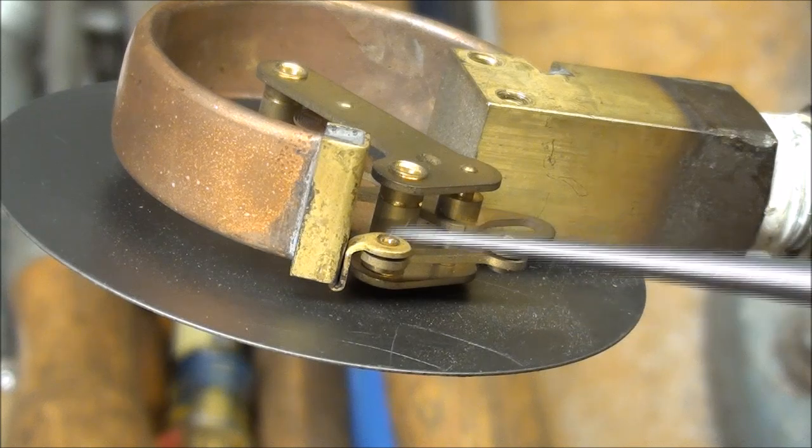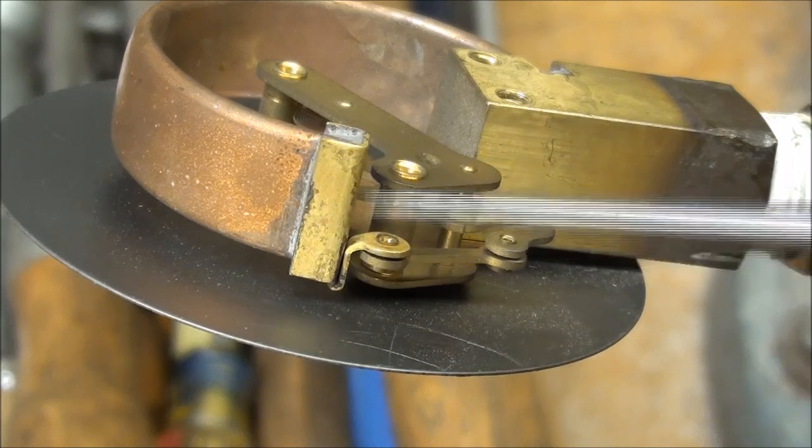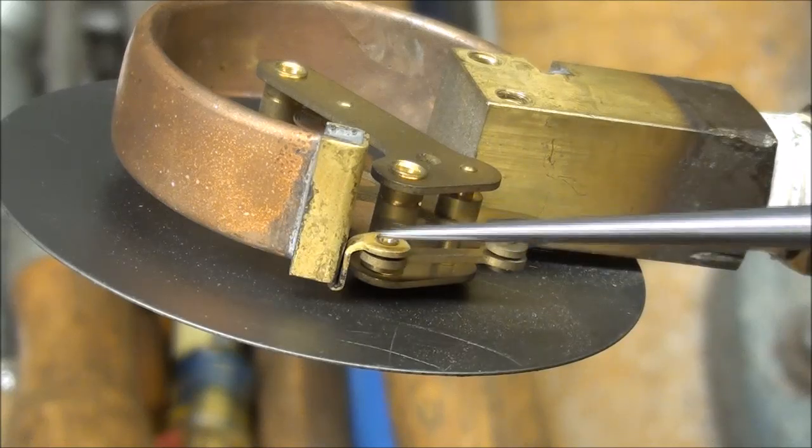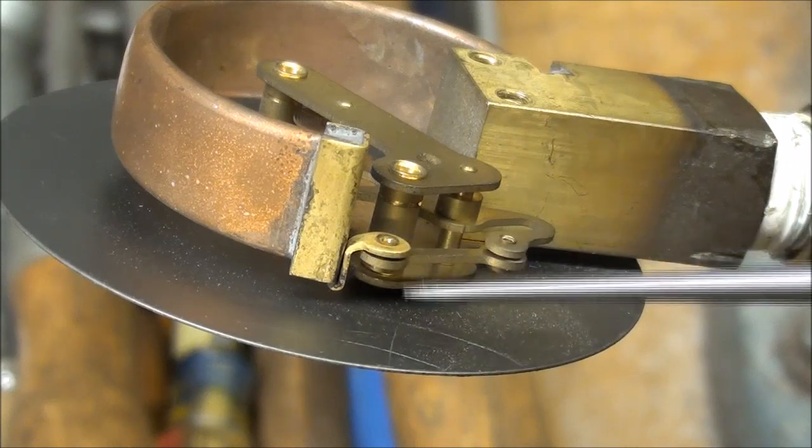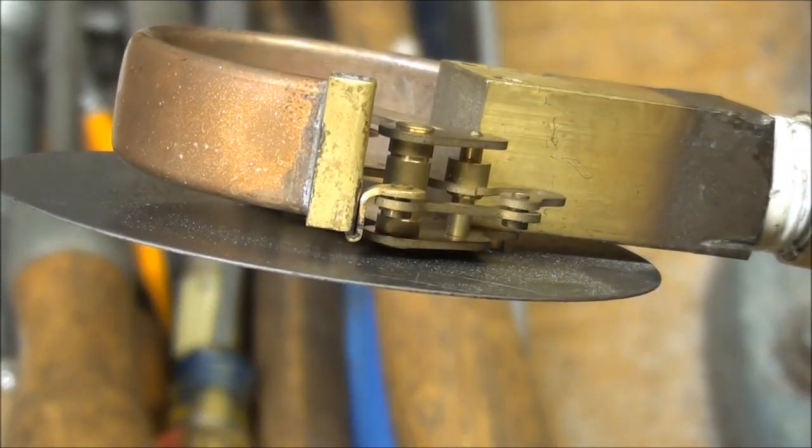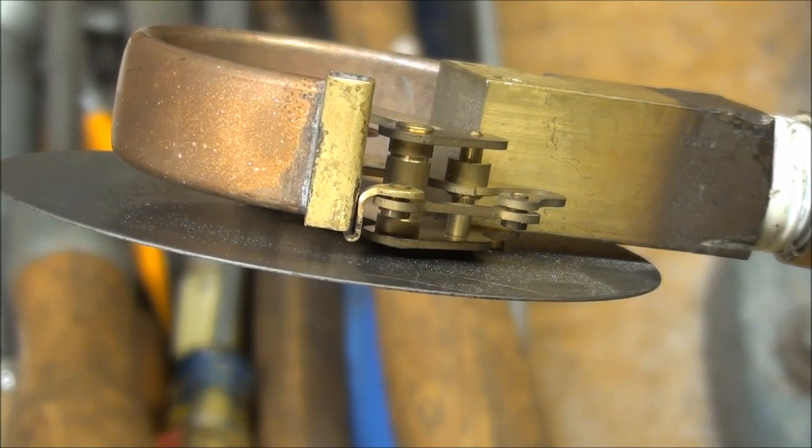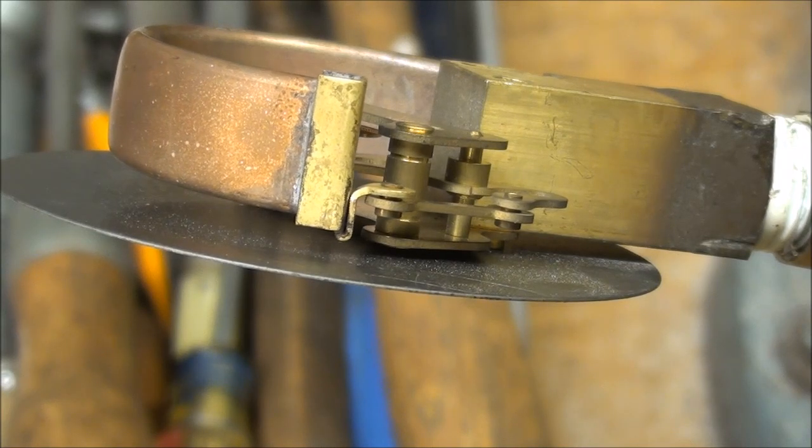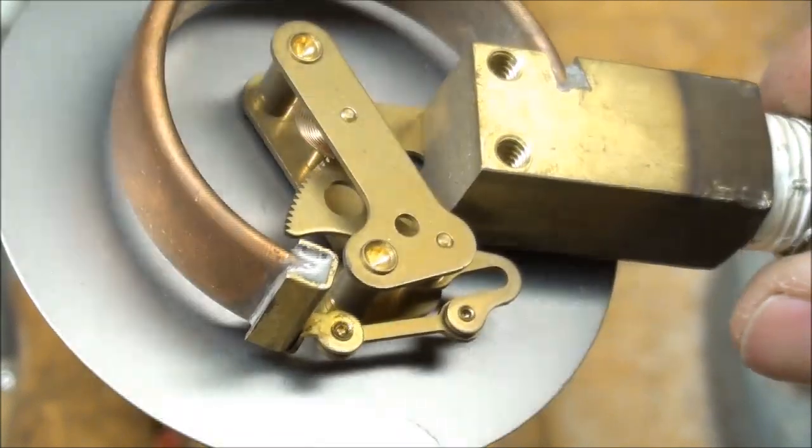From this view you can see this small link here is fastened on to the end of the Bourdon tube, permanently fastened, and then there's a pin here and here, and then this link here links it all to the movement. So watch now again as I pressurize it again, and you can see what the linkage is doing. Here comes the pressure. So that motion is transmitted through the linkages, and into the quadrant, and into the pinion, which in turn moves the needle, and I'll show you another view of that.